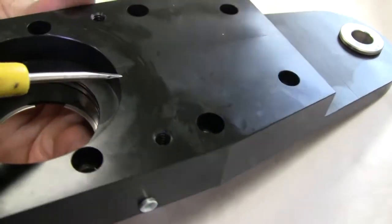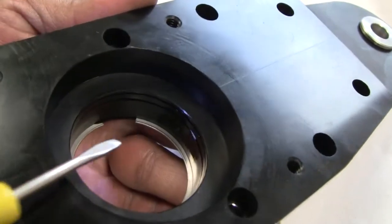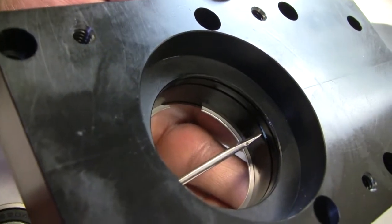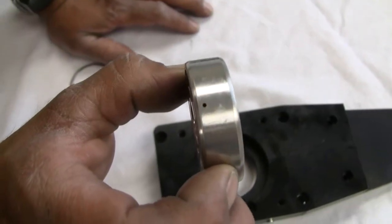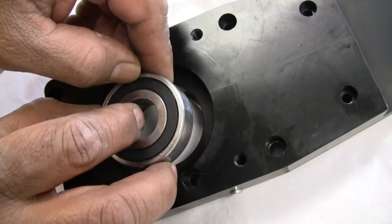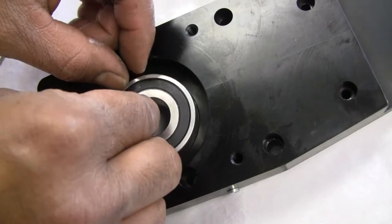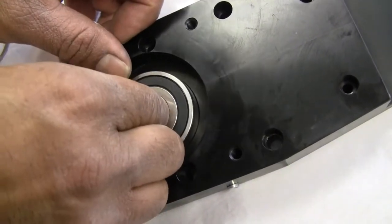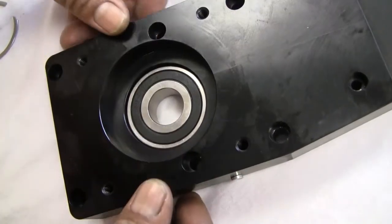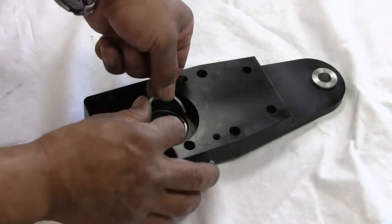The side plates have lubrication fittings which channel grease to the bearing assembly. Install the bearing with the lubrication hole on the bearing next to the grease channel on the side plate. Replace the retainer ring on the bearing.